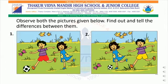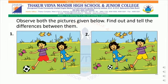Observe both the pictures given below. Find out and tell the differences between them. Students, once you see the pictures, you will remember your indoor and outdoor games periods in school. Which game are the children playing? Yes, it is a football game. Football is an outdoor game. The children are playing football in the garden. In order to find out the differences, you all have to first carefully observe the pictures, which almost look similar.